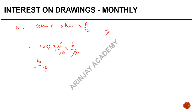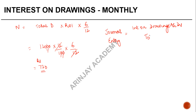To pass the journal entry in all these cases, it will be: Interest on Drawings Account — Debit, and it is charged to the partners, so it will be credited to Partners' Capital Account. Whether it is a fixed or fluctuating capital account will depend on the particular situation.